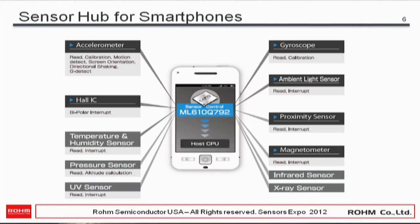For SensorHub in smartphones, the host CPU sits in the middle with the SensorHub connected, and all the sensors hang off the SensorHub. This shows what is done with each sensor — for example, accelerometer: read, calibration, motion detection, and so on.